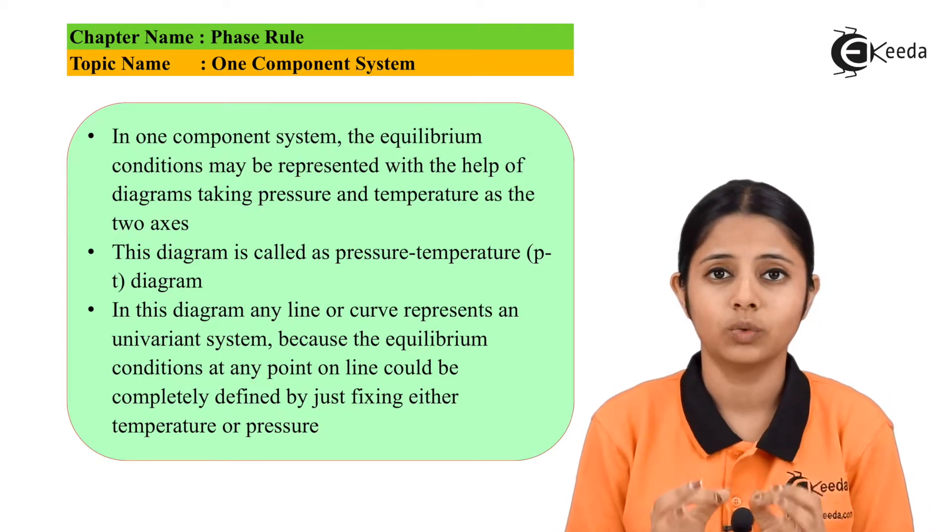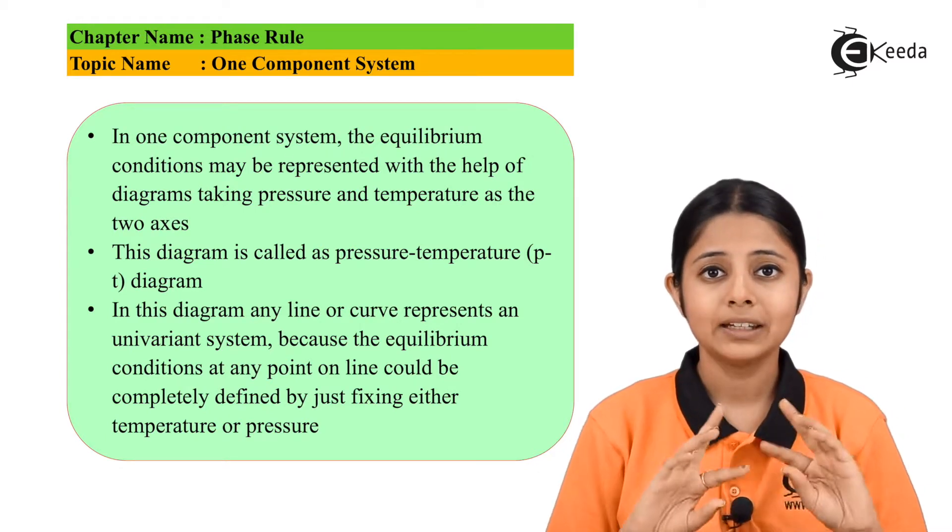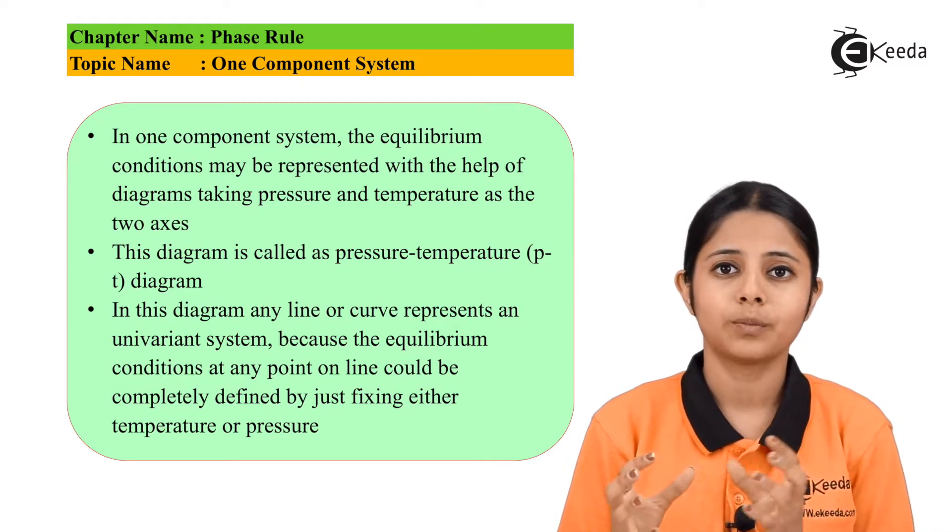I am using the word 'or'. You can either change the temperature or you can change the pressure, and then that will have an effect on the equilibrium. Thus, it is known as a one component system.